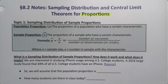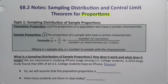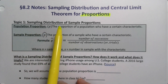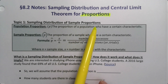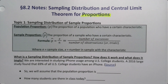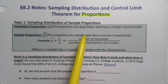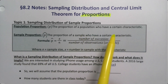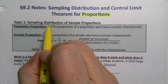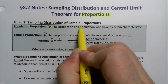Now that we understand the central limit theorem for means, we need to understand the central limit theorem for proportions. To do that, we'll have to look at the sampling distribution for proportions as well. The population proportion is the proportion of a population that has a certain characteristic — the thing you're looking for, the success, one might say. The sample proportion is the proportion of the sample who have those characteristics.